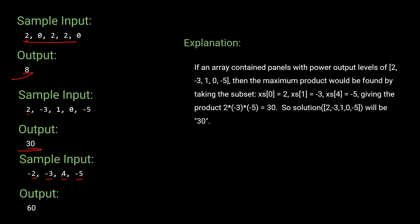In sample input three there are three negative numbers. We can only multiply an even number of negatives to get a positive result. We choose the two most negative numbers, -5 and -3, giving 15, then multiply by 4 to get 60. If we had used -2, the answer would be negative. So we exclude the least-negative number (-2) and the output is 60.